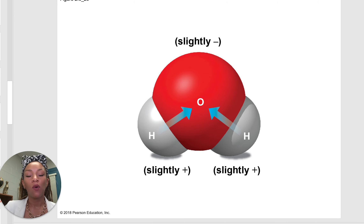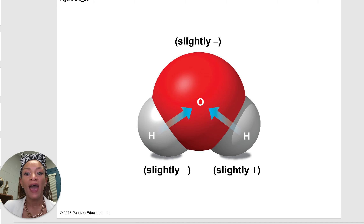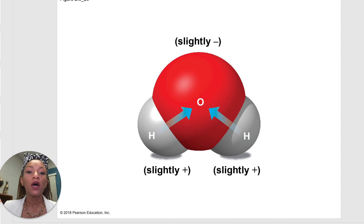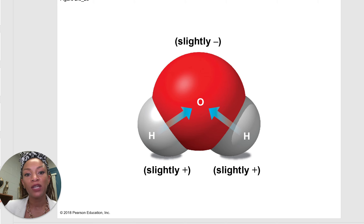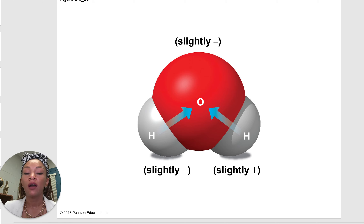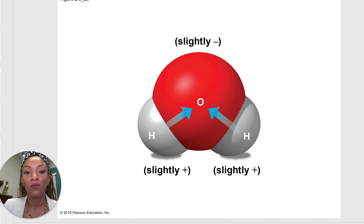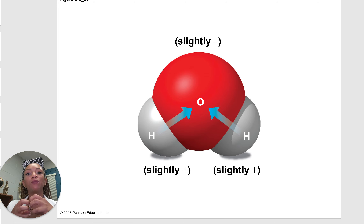Let's look at water. Water has polar covalent bonds. H2O is the chemical formula of water — two hydrogen atoms and one oxygen. Because oxygen is more electronegative, it's going to attract the electrons between the elements, giving oxygen a slightly negative charge because the electrons are closer to it. The hydrogen atoms get a slightly positive charge because those negative charges are being pulled more closely to the more attractive oxygen.